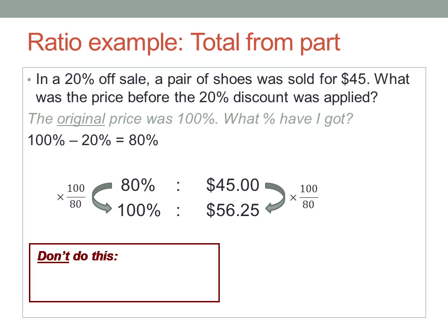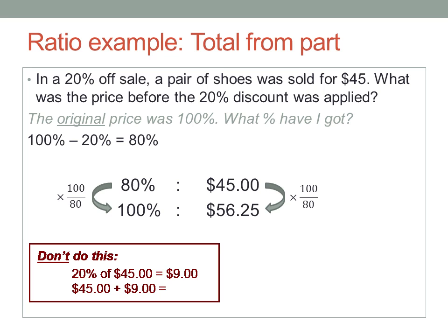Now I know some of you are thinking: why did we have to do all that? Couldn't we just get 20% of the $45 and add that on to get the original price? Well, why don't we try that and see what happens?